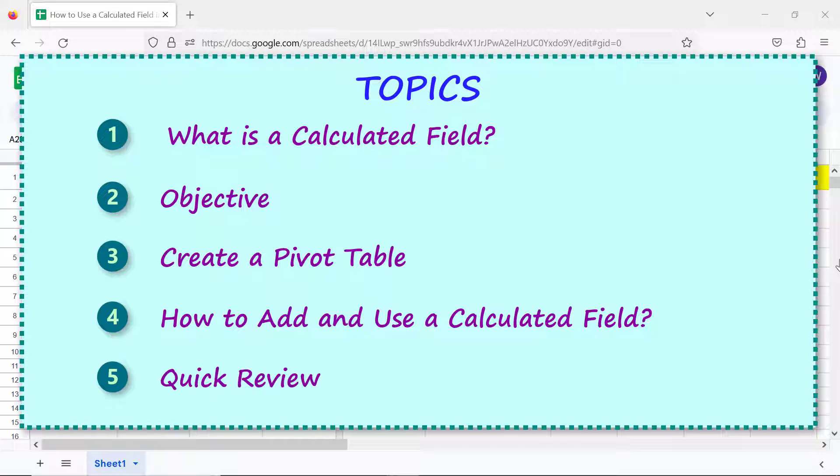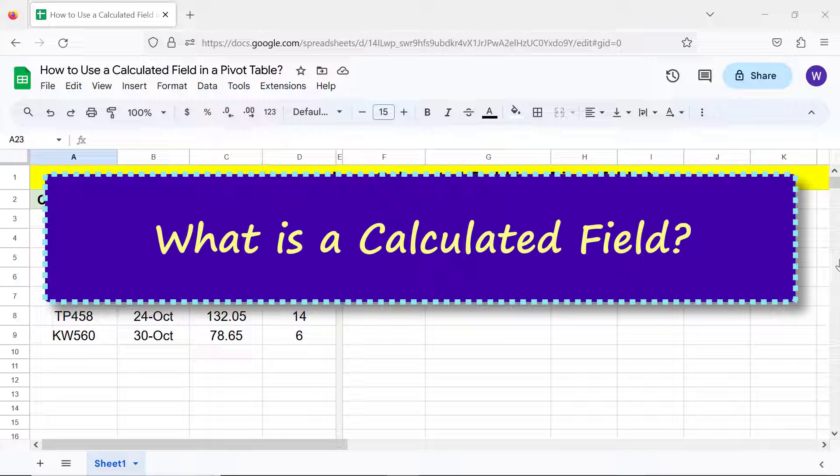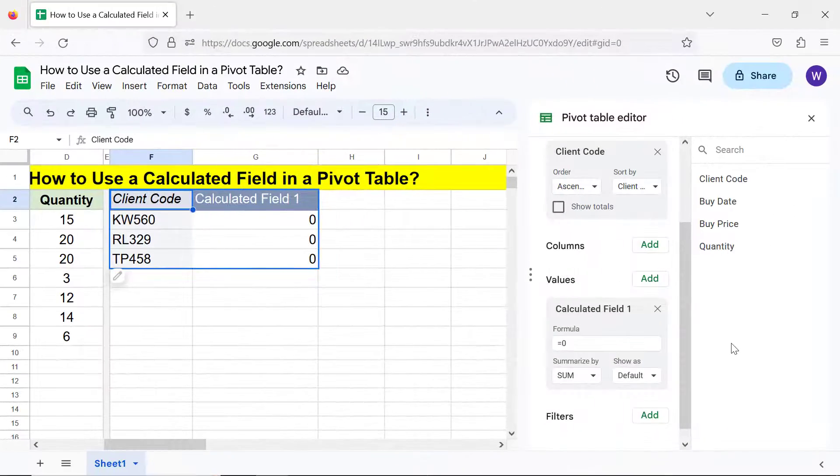What is a calculated field? A calculated field is a field related to values element of a pivot table. Type a formula in a calculated field to get data not in the source table.